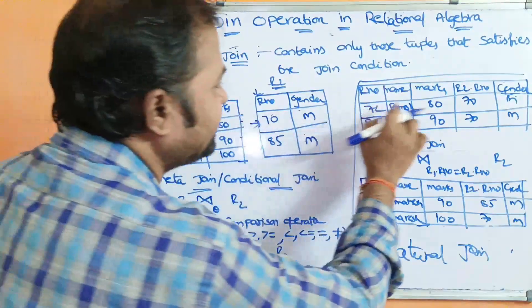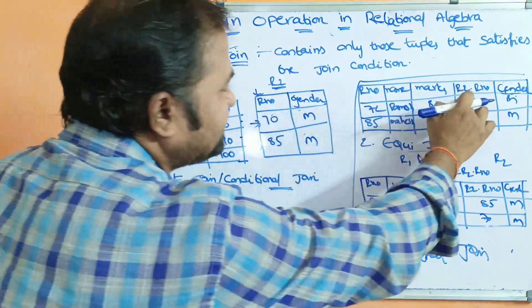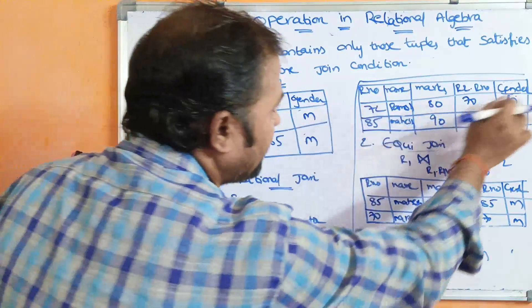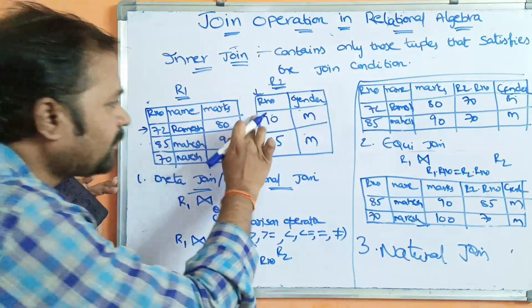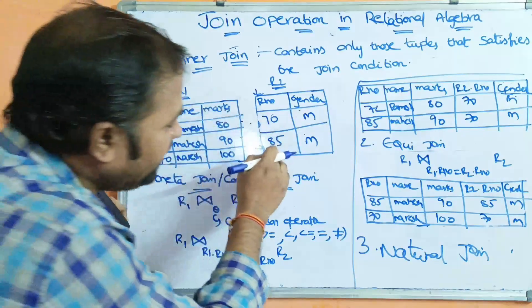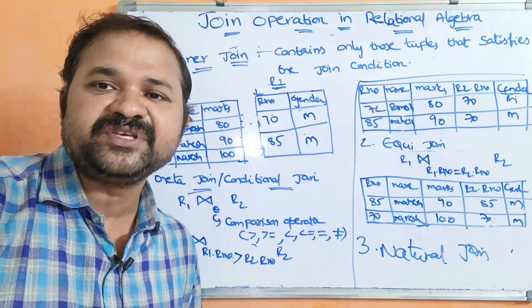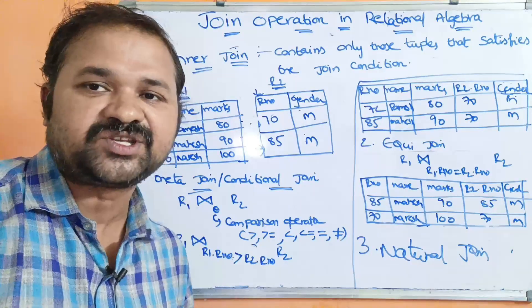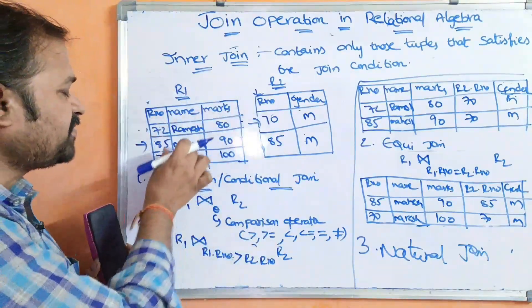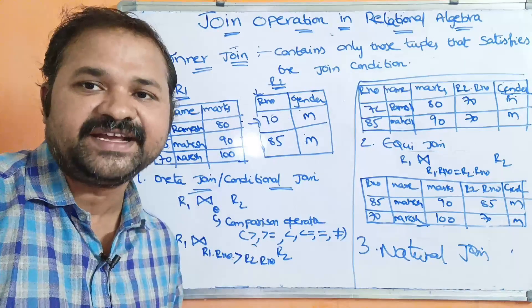The output row is 72, Ramesh, 80, then R2.roll_number is 70, male. Next, the first row of R1 is compared with the second row of R2: 72 and 85. 72 is greater than 85 is false, so this row won't be produced. Next, 85 compared with 70: second row of R1 with first row of R2. 85 is greater than 70, condition is true. So these rows are combined: 85, Mahesh, 90, then 70, male.